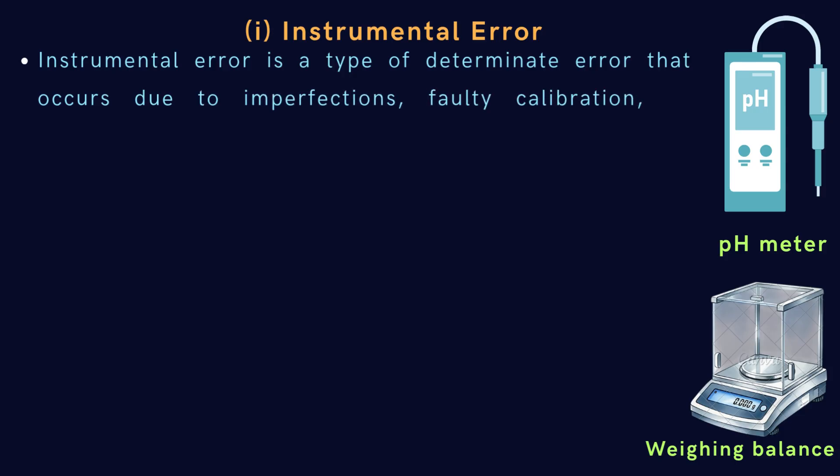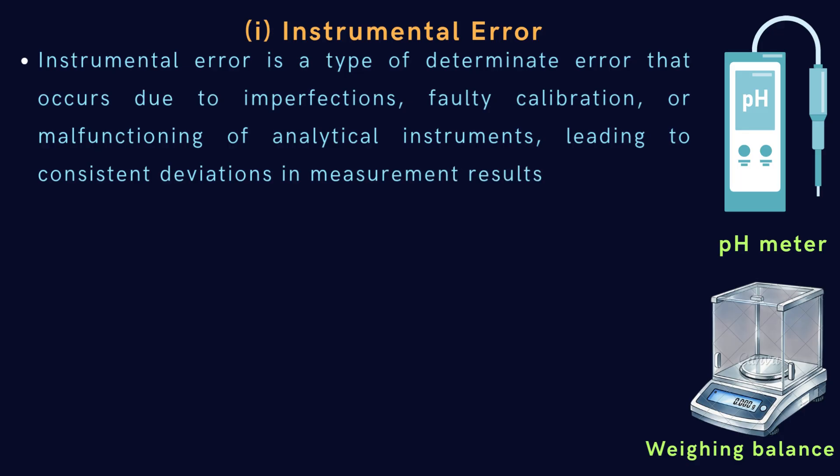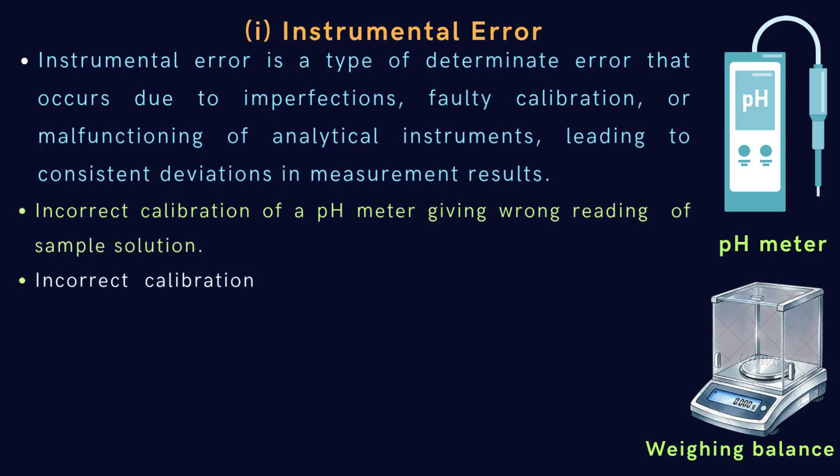Instrumental error is a type of determinate error that occurs due to imperfections, faulty calibration, or malfunctioning of analytical instruments, leading to consistent deviations in measurement results. For examples: incorrect calibration of a pH meter giving wrong readings, incorrect calibration of an analytical balance giving wrong mass readings.